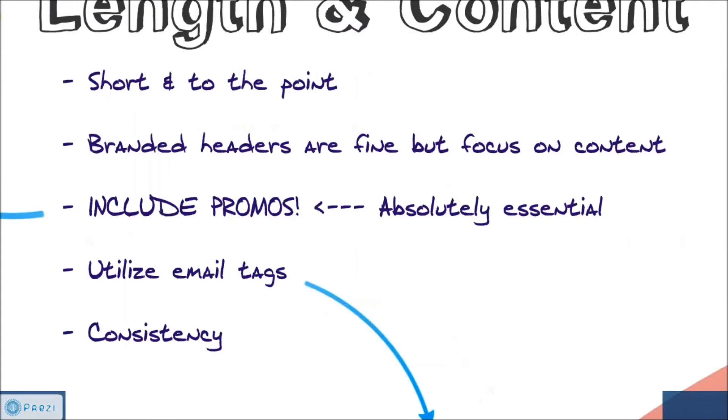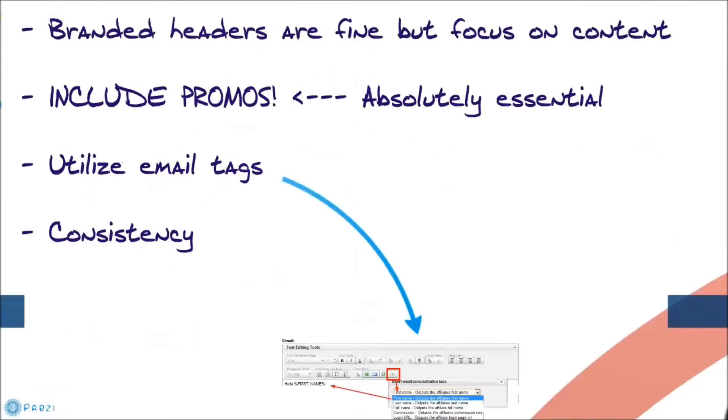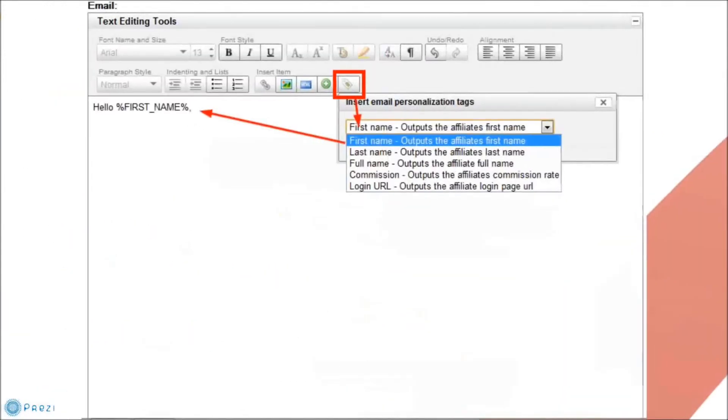The next one is to utilize email tags, and these are really nice because they make emails a little bit more personal. You can see the drop-down box here. It says first name, last name, full name, commission, and login URL. You can select any one of these to put in the information specific to that affiliate. You can see the example in the email. It says hello, first name, and that would obviously be filled with the affiliate's first name.